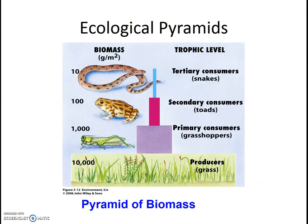Yet another model for showing the energy transfer through a community is called an ecological pyramid — sometimes called the food pyramid — which gives us a visual representation of the energy loss at each trophic level. The first trophic level, the producers, has to be very large in order to support a long food chain. Remember the second law of thermodynamics, and remember that the entire trophic level is not eaten by the next trophic level. Indeed, the energy pyramid helps us visualize why food chains generally are not longer than 5 or 6 trophic levels.